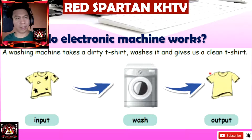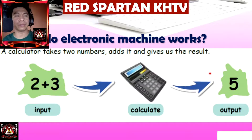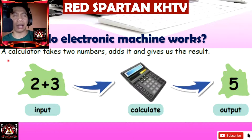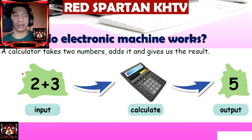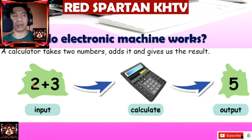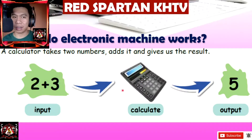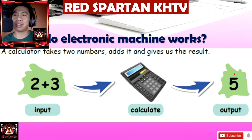Another example: a calculator. A calculator takes two numbers, adds them, and gives us the result. So if we input two numbers — for example, 2 plus 3 — the calculator will calculate it, and the output the calculator gives us is the answer, which is 5.